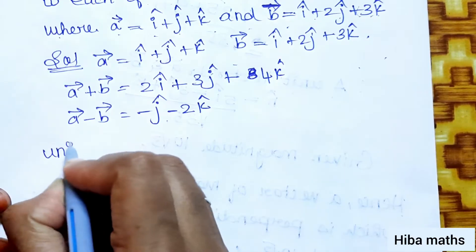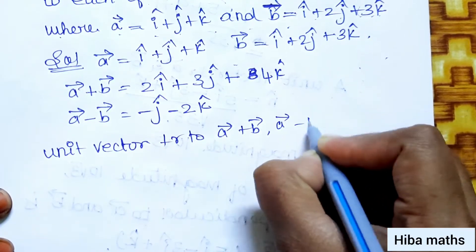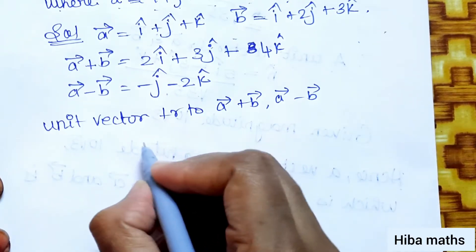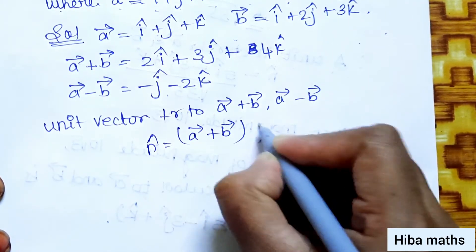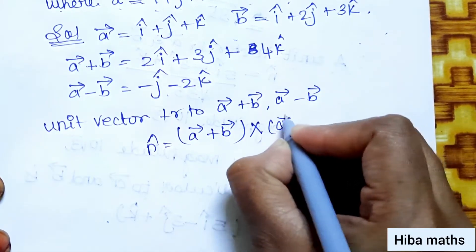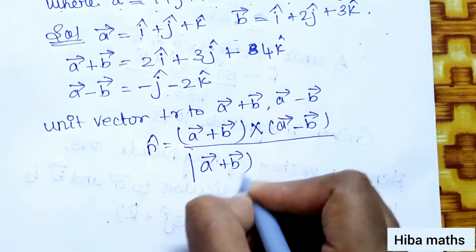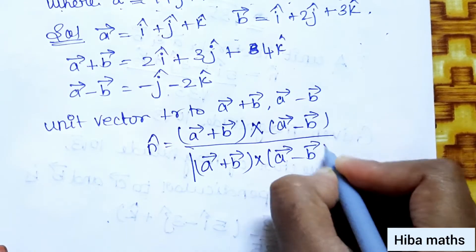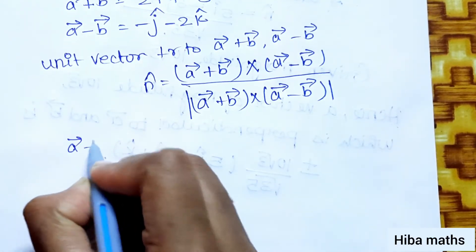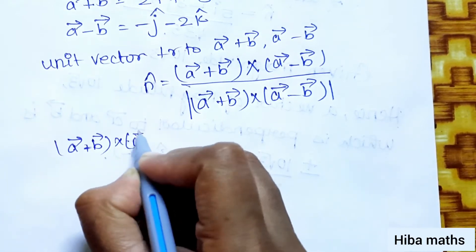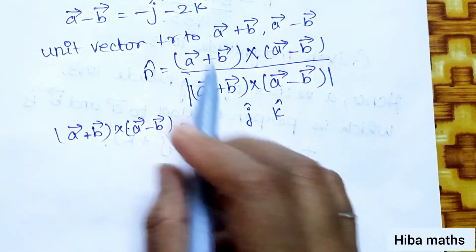The unit vector perpendicular to both A+B and A-B is given by the cross product (A+B) × (A-B). Setting up the determinant with i, j, k in the first row; A+B components 2, 3, 4 in the second row; and A-B components 0, -1, -2 in the third row.